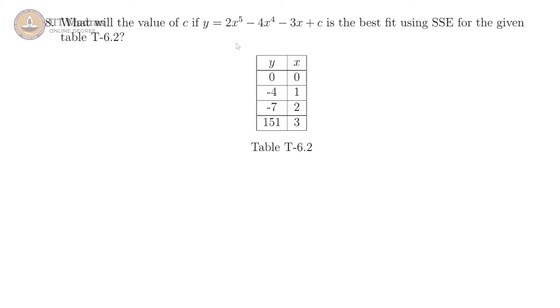Our last question, we are looking at the best fit for some data. This is the fit we have obtained, a fifth degree polynomial for this data, these four points, and they are asking what is the value of c. c is the constant term here. What is the value of c if this curve has to be the best fit using sum squared error.